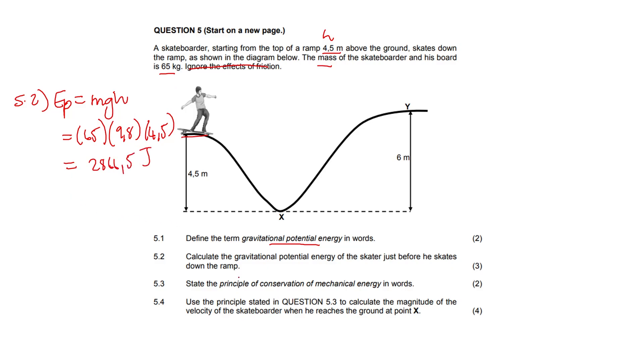Question 5.3: State the principle of conservation of mechanical energy in words. The total mechanical energy, which means kinetic and potential energy added together, in an isolated or closed system remains constant or is conserved.